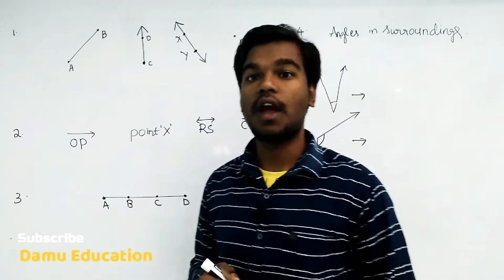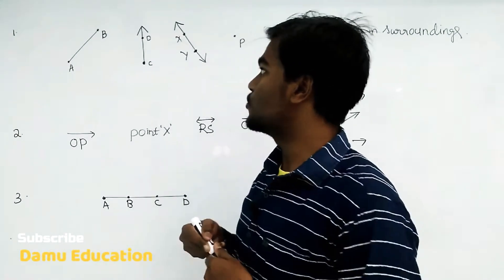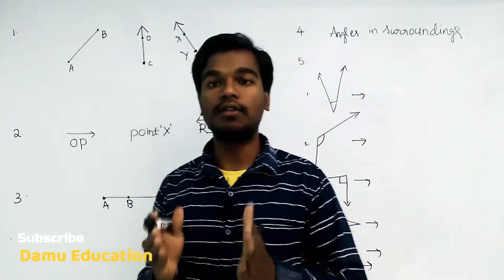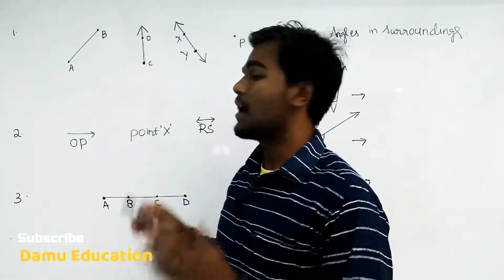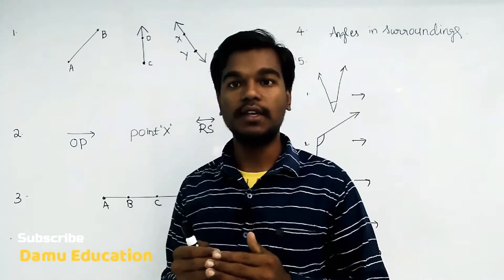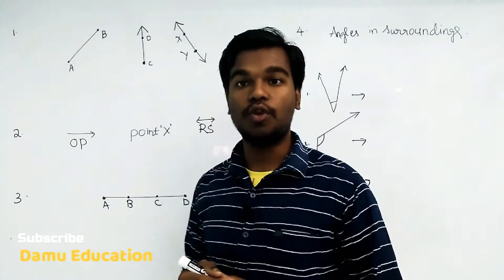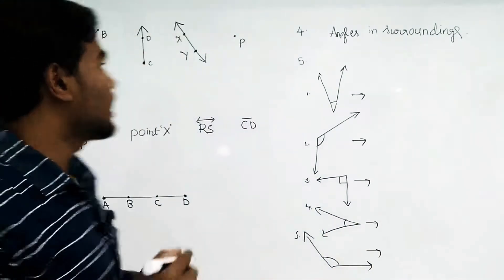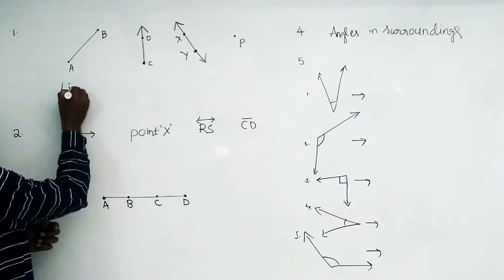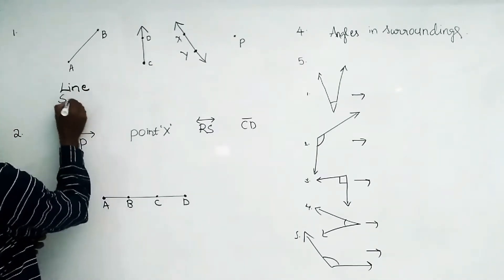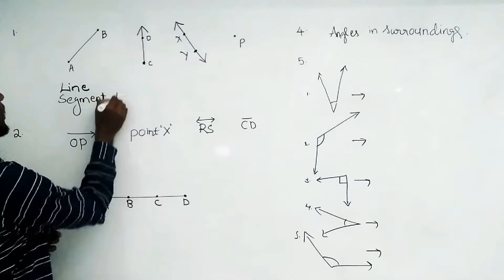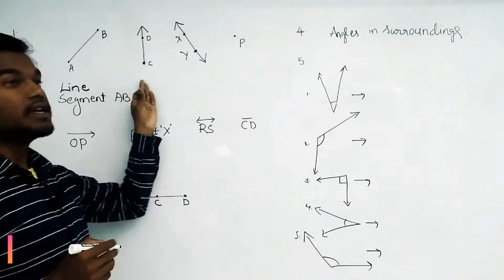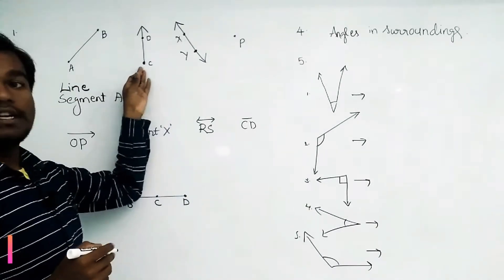Our first one is AB line segment. A line segment is a part of a line, and it will always start at one point and end at another point. This is the representation of line segment AB.